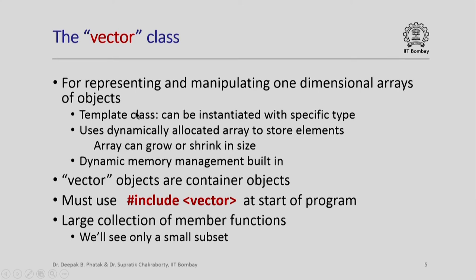The vector class uses a dynamically allocated array to store elements, so the array can grow or shrink in size. A very nice feature is that dynamic memory management is built in, so you as a user do not need to worry about dynamic memory allocation or deallocation. Vector objects are container objects — they hold a collection of objects of some other type.